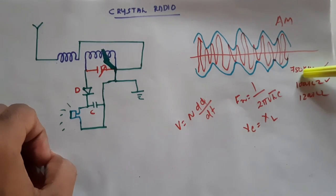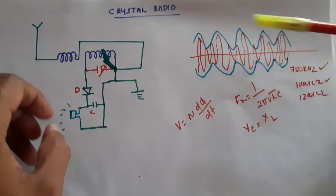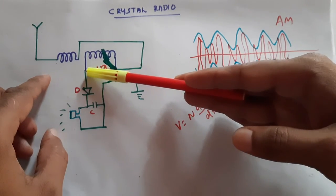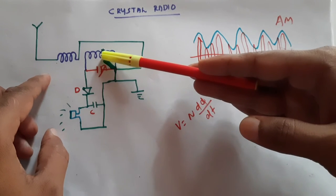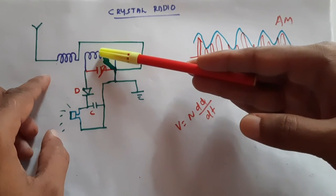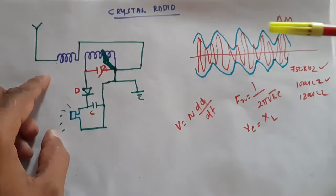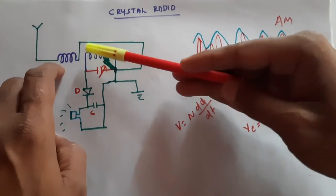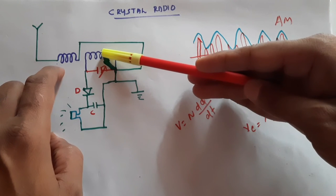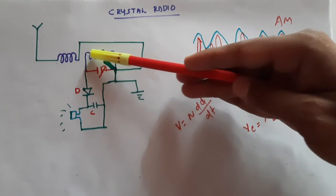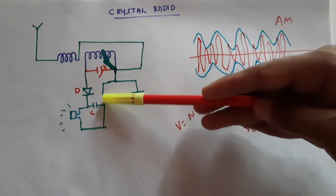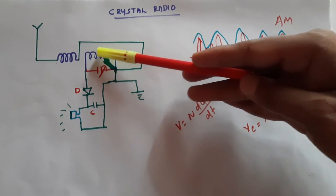At a lower frequency, say 600 kilohertz, the inductor impedance will be higher and the capacitor impedance lower. If we move the sliding contact to reduce the number of turns, the inductance decreases and the impedance of the inductor becomes very low, producing a low voltage at that frequency. Consequently, the voltage across the circuit will be very low and the current to the detector will be very low.